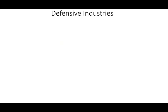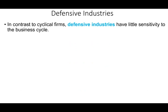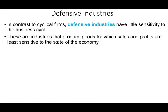In contrast to cyclical industries, we have defensive industries. Defensive industries are a little bit less sensitive to the business cycle — not as affected as cyclical industries. Think about your utility bill: it's going to be almost the same whether we are going through a recession or an expansion. You might spend a few dollars more or less, but it doesn't make much of a difference. Utilities companies will basically make the same income regardless of whether the economy is going through a recession or an expansion. These are industries that produce goods for which sales and profits are least sensitive to the state of the economy.